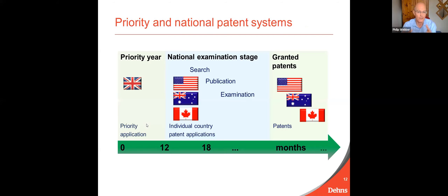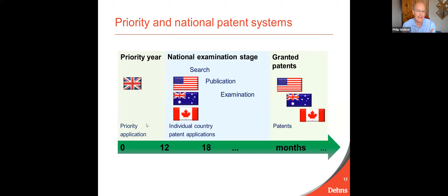Once you've overcome that, you can think about where to file around the world. This slide gives a summary of the basic process. Your first patent application will be called a priority application, and quite often that's filed in your home country. Within 12 months of that, you then have to decide which other countries around the world you want to file patent applications in. You then take your patent application and file it at the different patent offices — for example, United States and Canadian patent offices — and then the patent examiners in each of those countries will examine your patent applications essentially independently.